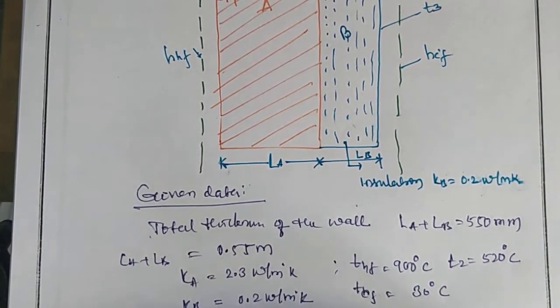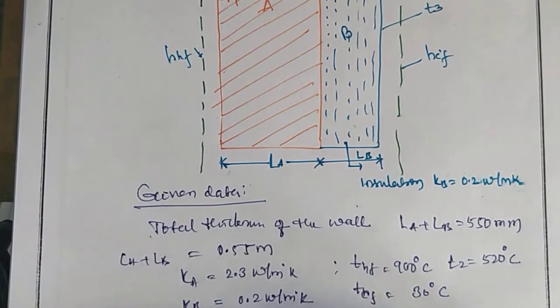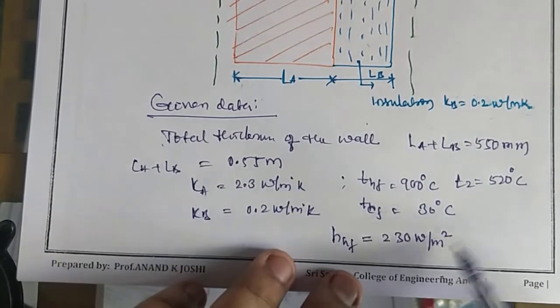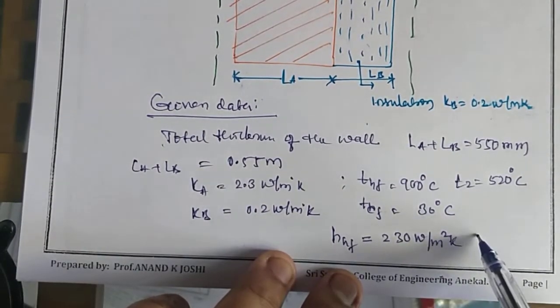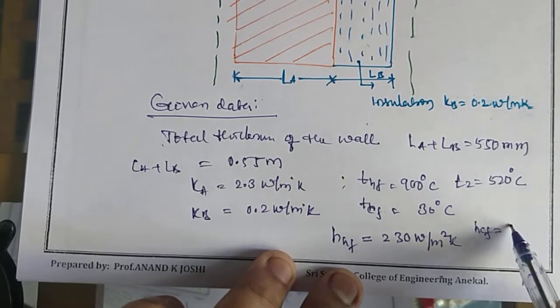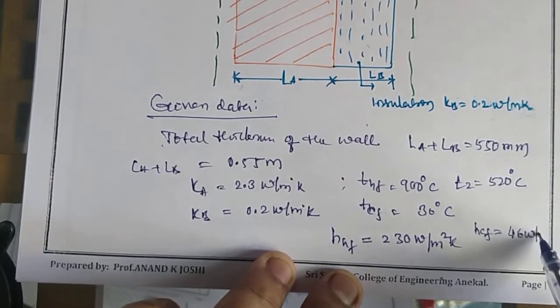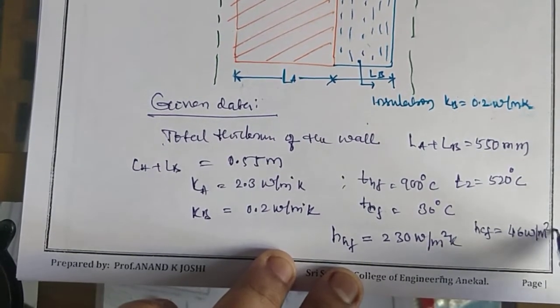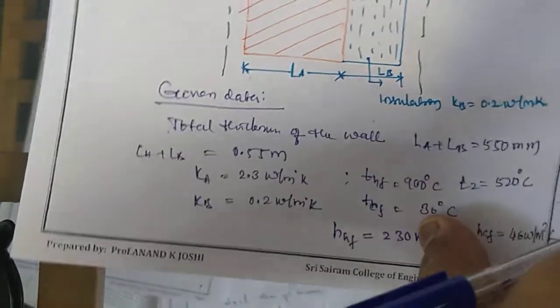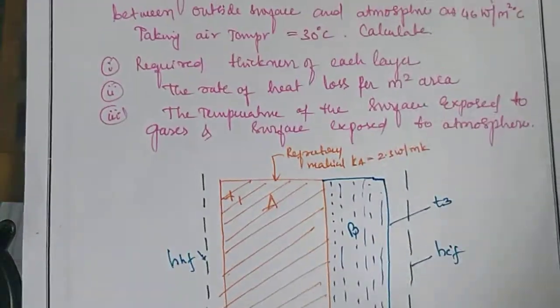H_HF is 230 watt per meter square Kelvin, and H_CF is 46 watt per meter square Kelvin. These are all the data that were given.